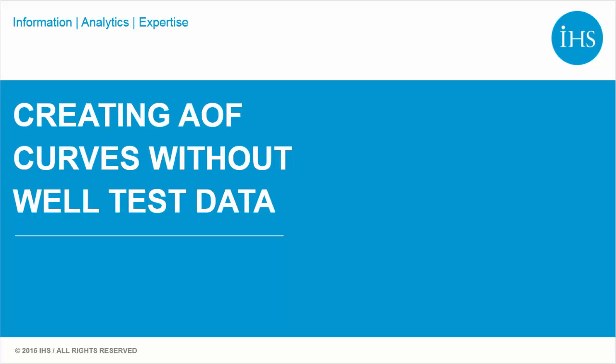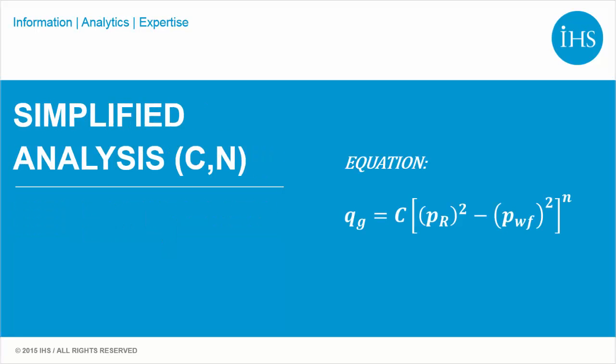In these cases, we can still estimate a deliverability based on current production data and a reasonable estimate of reservoir pressure. As can be seen in the equation, there are five terms. If we know four of those terms, we can determine the fifth.